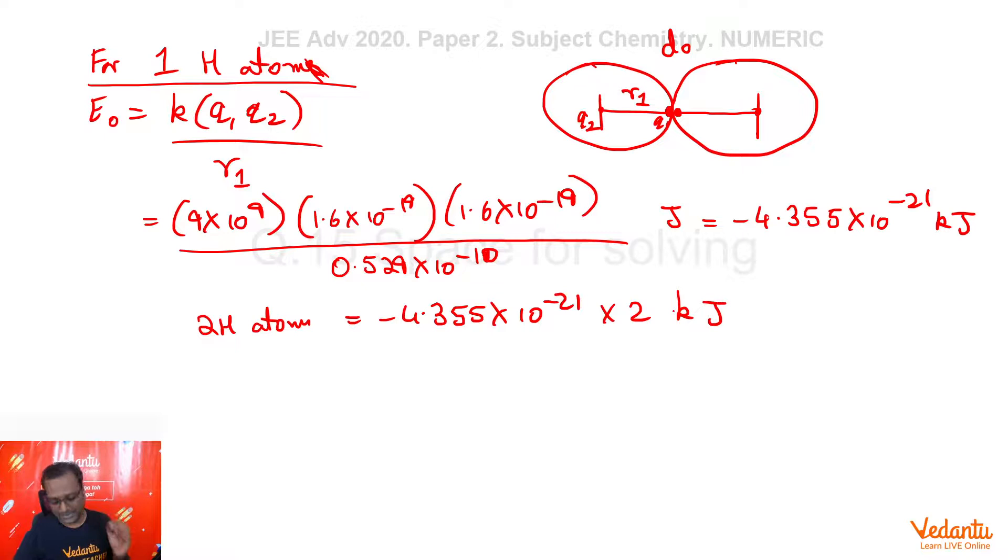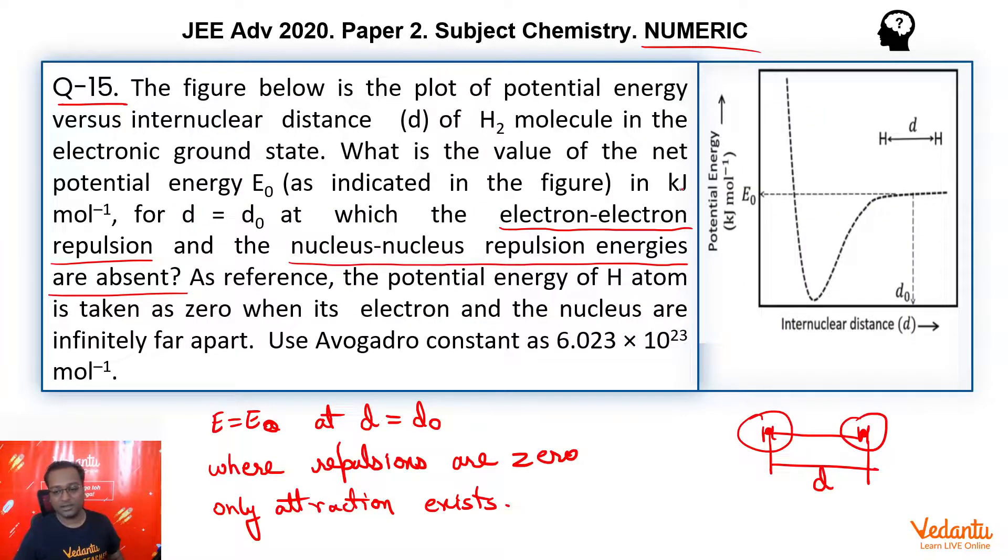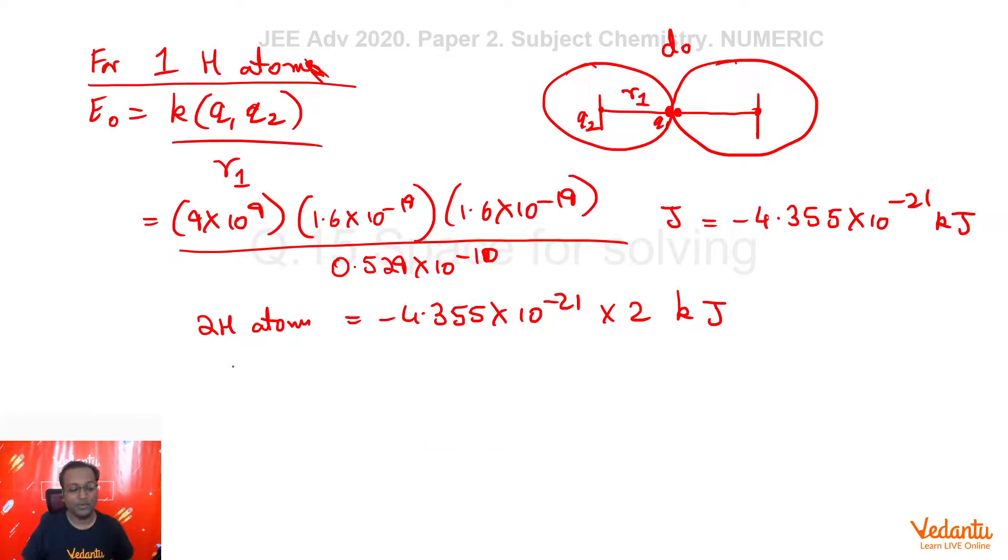But the question said, find the answer in kilojoule per mole of H2 molecule. So, for per mole, for one mole H2 molecule, what will we have to do? This is, this we calculated for two H atoms. That is one H2 molecule. We need one mole of H2 molecule, so we multiply the above number. I am just rearranging it into Avogadro, which is given in the question as 6.023 into 10 to power 23.